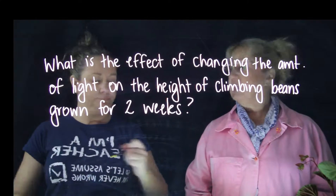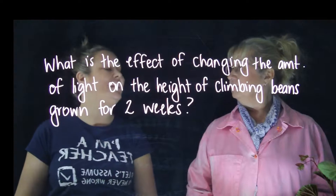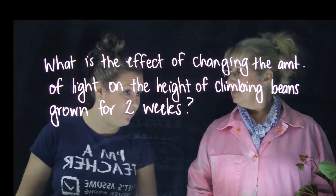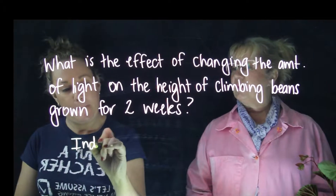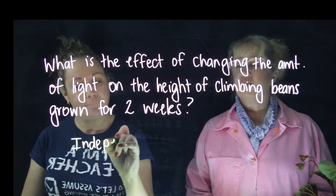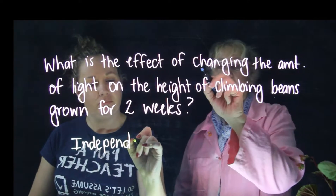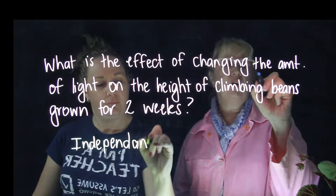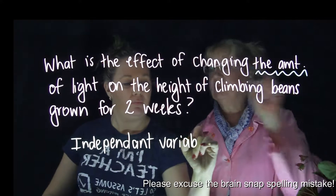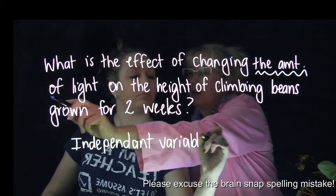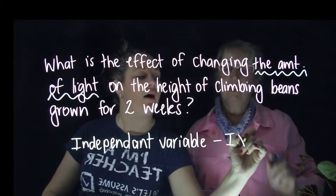The first element we're going to look at is the independent variable. The independent variable is the thing you choose to change. We are changing the amount of light, and that is our independent variable, also known as the IV.